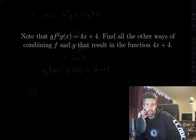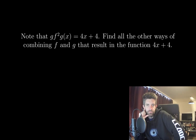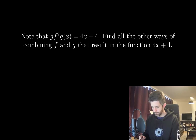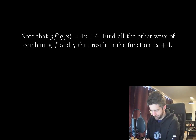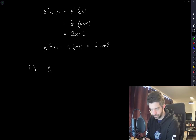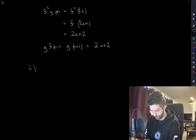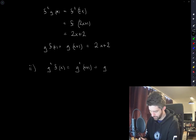Part 2 says: note that gf squared g of x is equal to 4x plus 4. Find all the other ways of combining f and g that result in the function 4x plus 4. Certainly, g squared f works, because this is g squared of x plus 1, which is g of 2x plus 2, which is 4x plus 4.